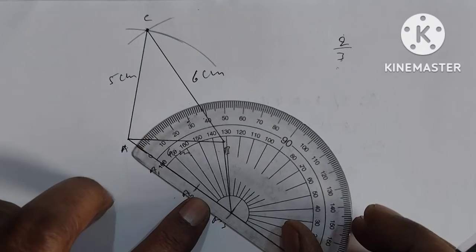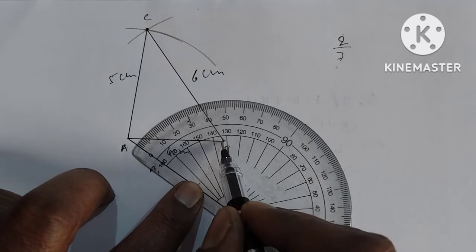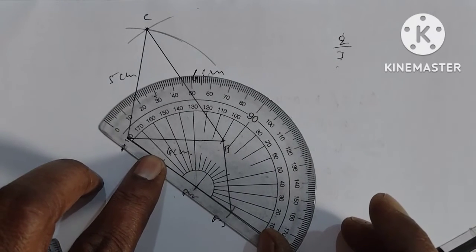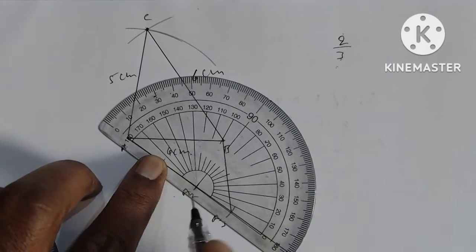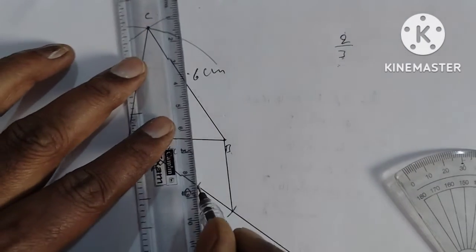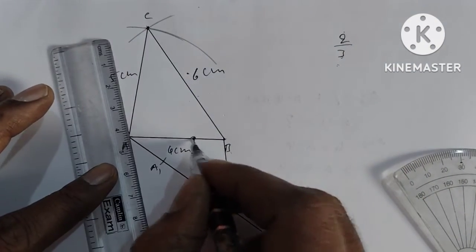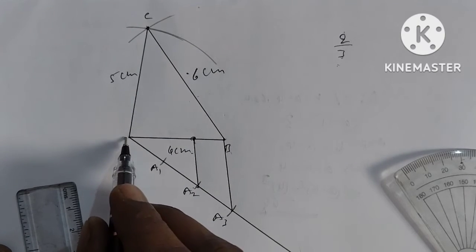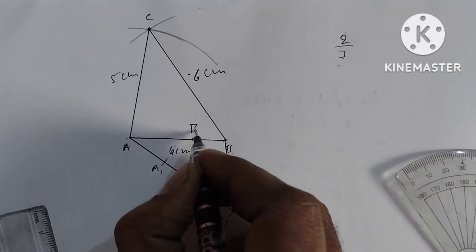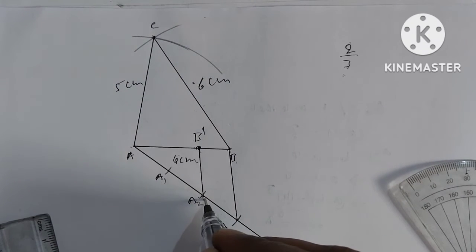We draw a 2/3 parallel line using this technique. Here we measure the angle — the angle is 47 degrees. We mark this point at 47 degrees. This gives us point B dash. B dash lies on a line parallel to the original side. This is the parallel line.